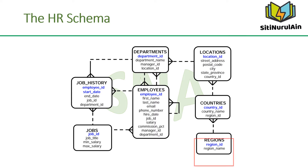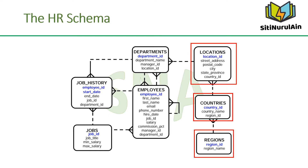Regions contains rows that represent a region such as America, Asia, and so on. Countries contains rows for countries, each of which is associated with a region. Locations contains the specific address of a specific office, warehouse, or production site of a company in a particular country. Departments shows details about the departments in which the employees work. Each department may have a relationship representing the department manager in the Employees table.